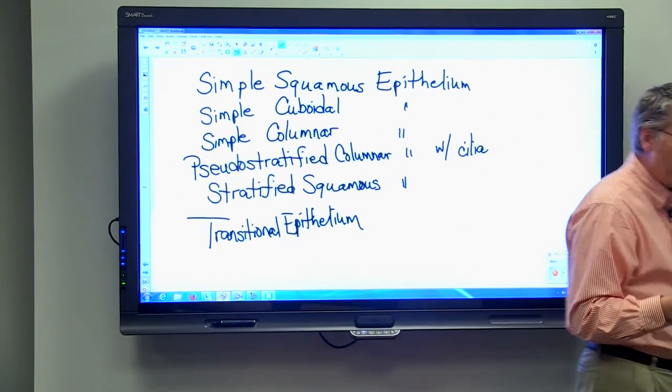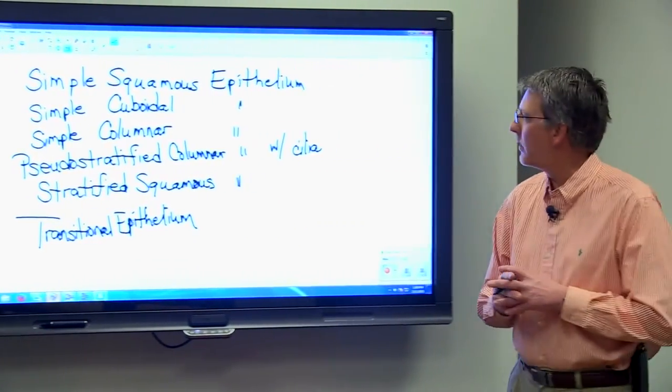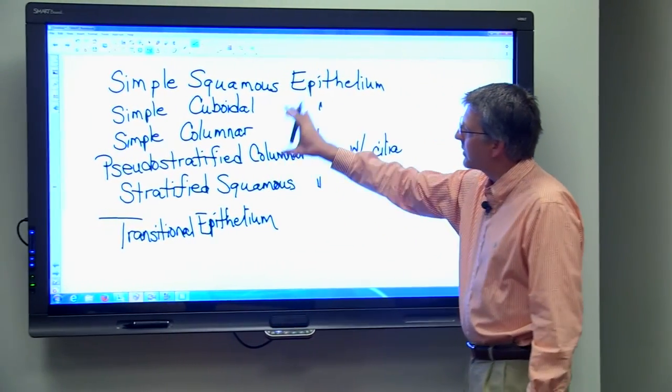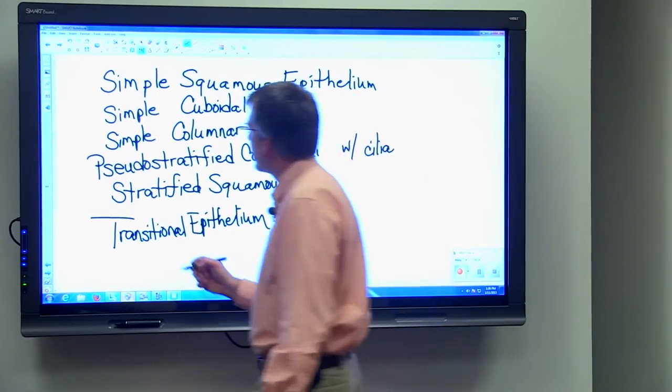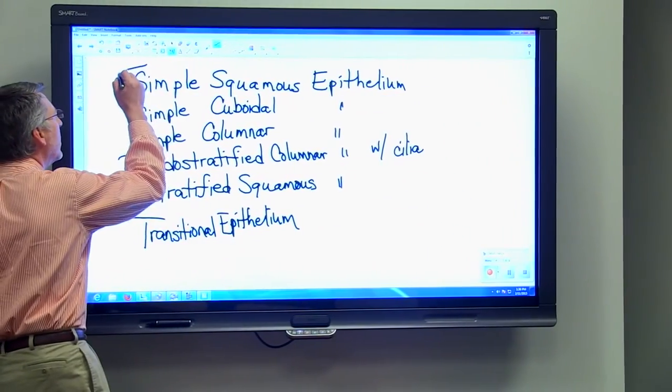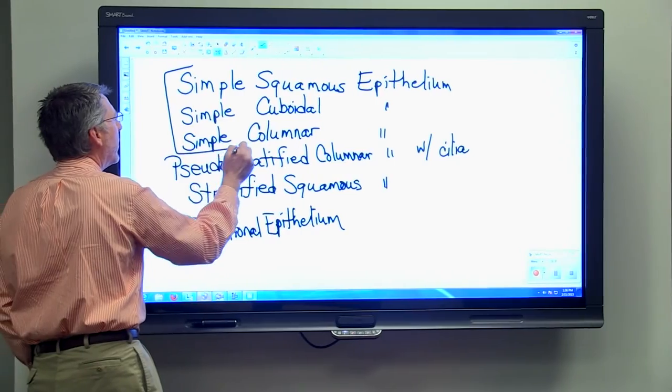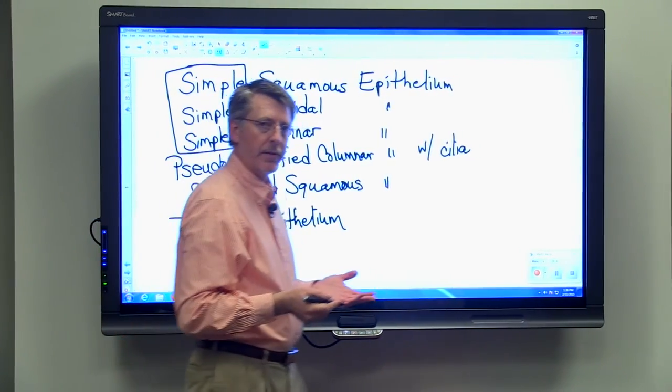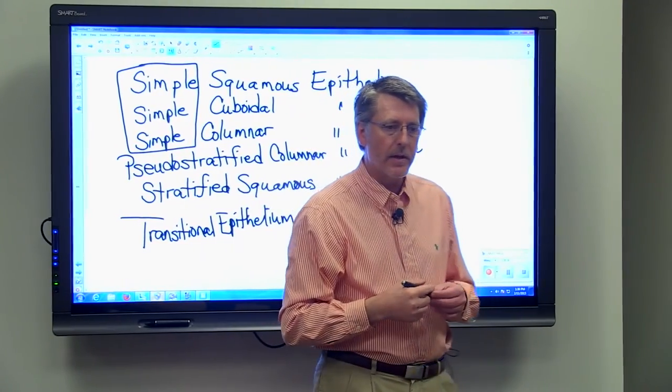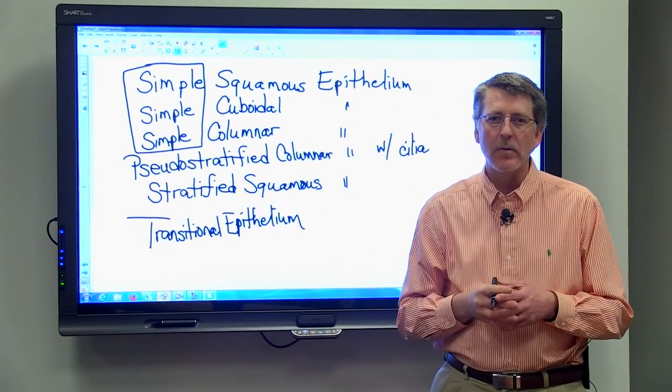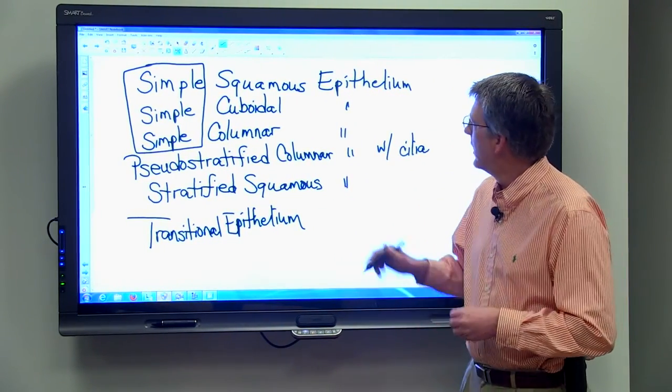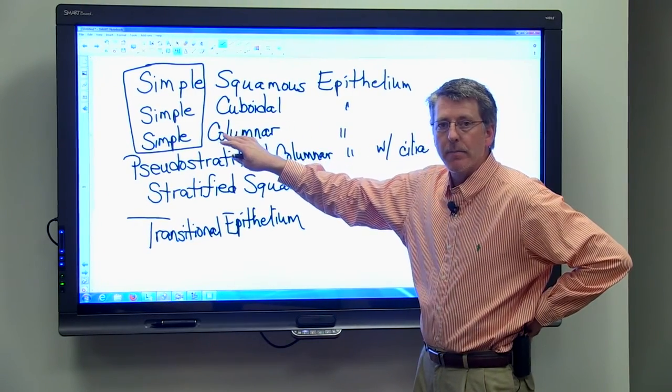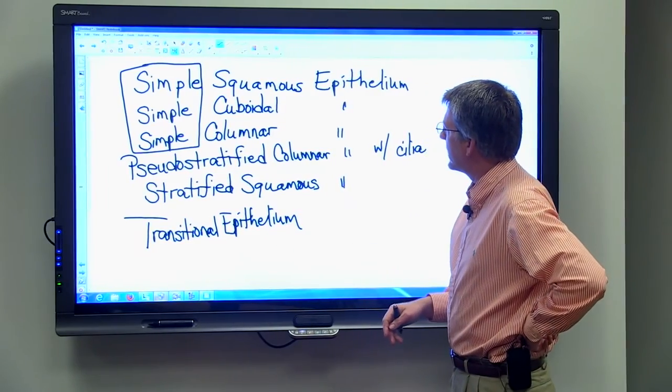Alright, so six different kinds of epithelial tissues, and I wanted to write them up here so you can see them all together for a couple of reasons. One, you see that the first three are what we refer to as simple tissues, and just a second ago we said that a simple tissue is one that's only one cell layer thick. So simple squamous, simple cuboidal, and simple columnar are all simple tissues.